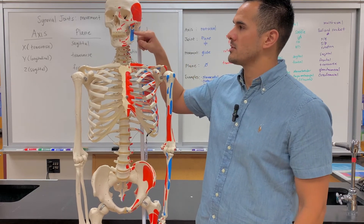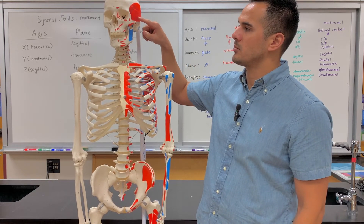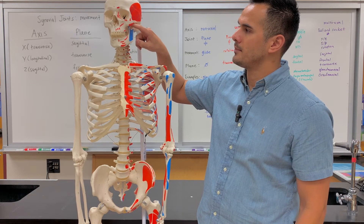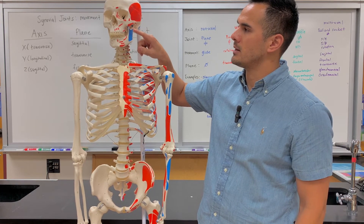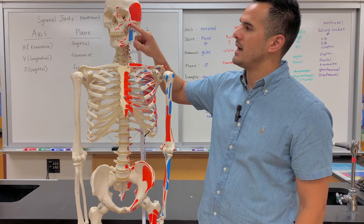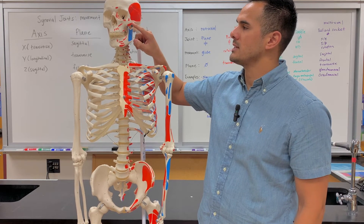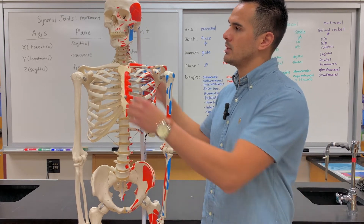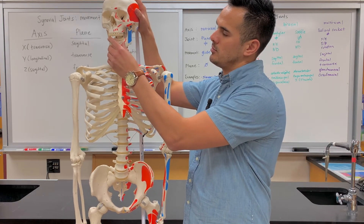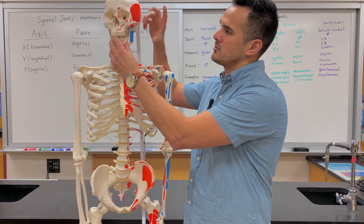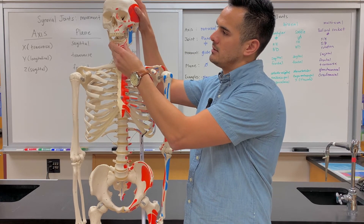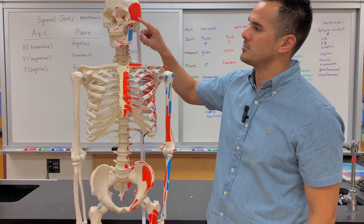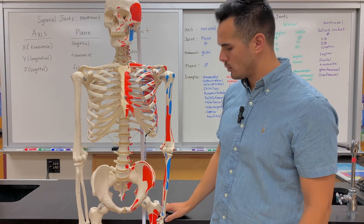Another example: the temporalis originates at the temporal fossa and inserts on the coronoid process of the mandible. The masseter attaches at the zygomatic process — that's the origin — and the insertion is here on the mandible. Both of these muscles help to elevate the jaw. You bring the jaw down and then as those muscles shorten, they bring it up. Once again, the insertion for both muscles is moving towards the origin.